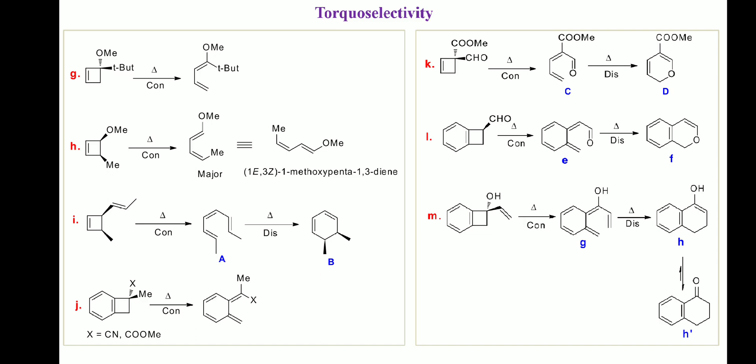In reaction M, according to the nature of the substituents, inward movement of the vinyl group and outward movement of the hydroxy group leads to intermediate G, which being a 4N+2 pi-electron system undergoes disrotatory electrocyclic ring-closing to produce product H. Product H, after keto-enol tautomerism, converts to the stable keto form H'.